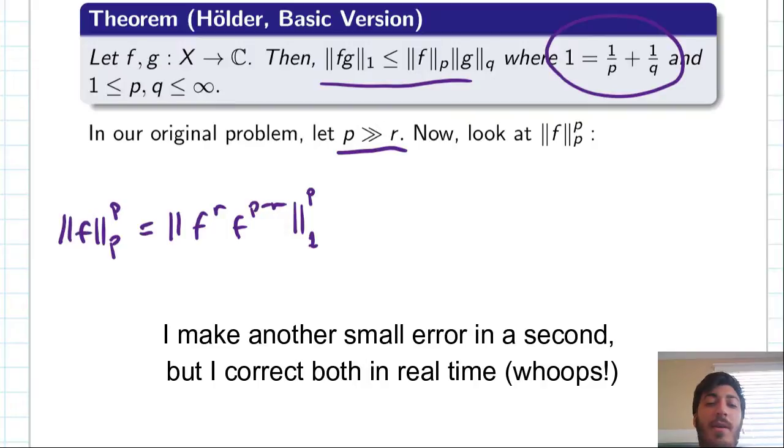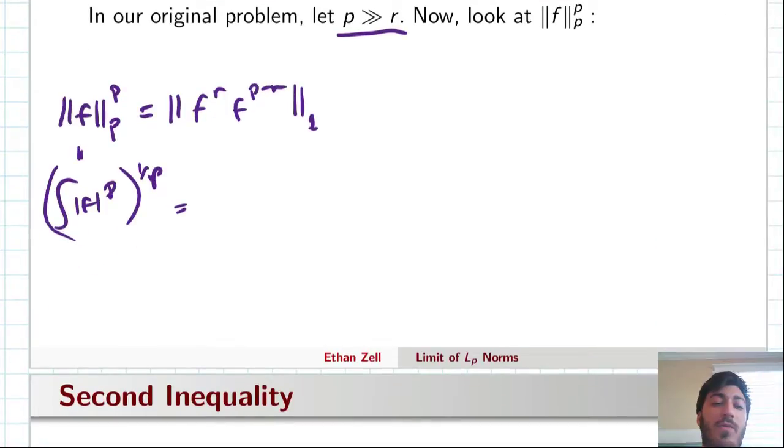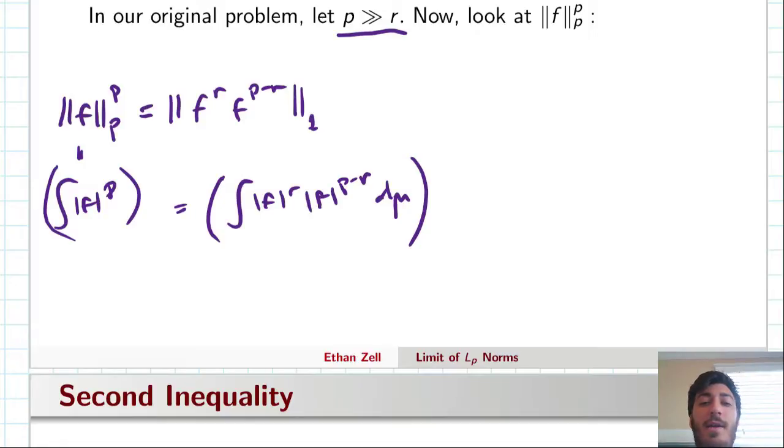Well, so we have 1 over p, and then, actually no. So that is actually canceled because if we write this all out, really what I'm saying is this, which is then equal to f to the r, f to the p minus r, d mu. But this is raised to the pth power here, so that fractional power is gone, which means there's just a one outside. So, it's really just what I wrote above here. I'm kind of writing myself in circles, but just to clarify what I meant by moving that norm notation around.